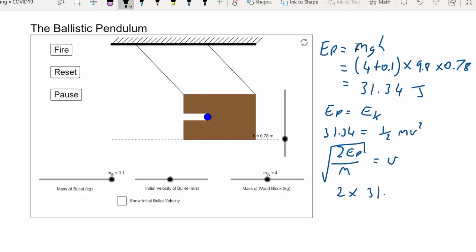And so let's have a go at that. 2 times this energy, 31.34 divided by the mass, which is still 4 plus 0.1. And if I square root all of that, that'll give me the velocity of the block and the bullet after it's entered.